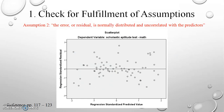Looking at the scatter plot, we want to know whether assumption 2 is fulfilled. A visual inspection shows that the dots are scattered throughout, which means the errors are normally distributed — this meets the second assumption. If the dots created a pattern, that would indicate the residuals are not normally distributed, but in our case the second assumption is fulfilled.